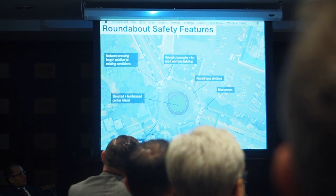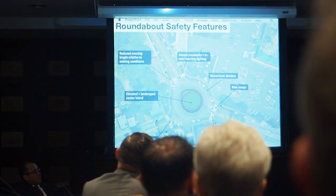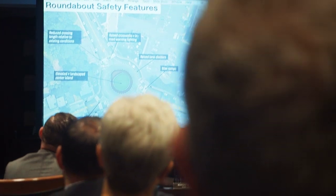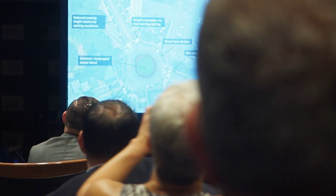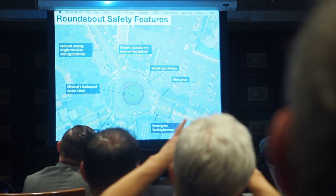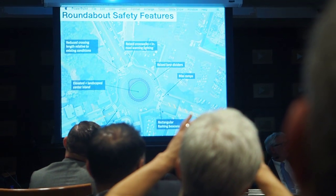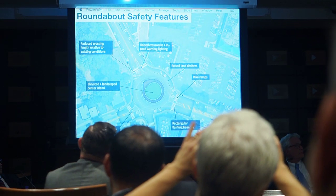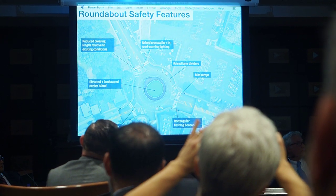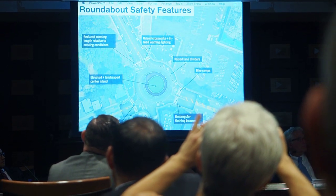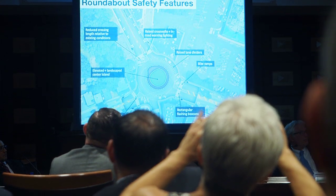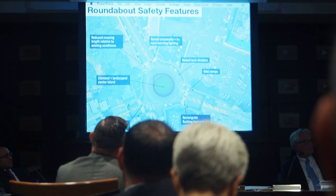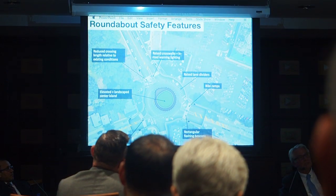At the roundabout, vehicles basically have to go over what is similar to a speed table in the pedestrian realm. Also, in-road warning lights — similar to the flashing beacons you would have on the sides — can be embedded into the pavement, so when someone's walking across the street there are actually lights within the crosswalk, allowing people to have better visibility to the pedestrians.